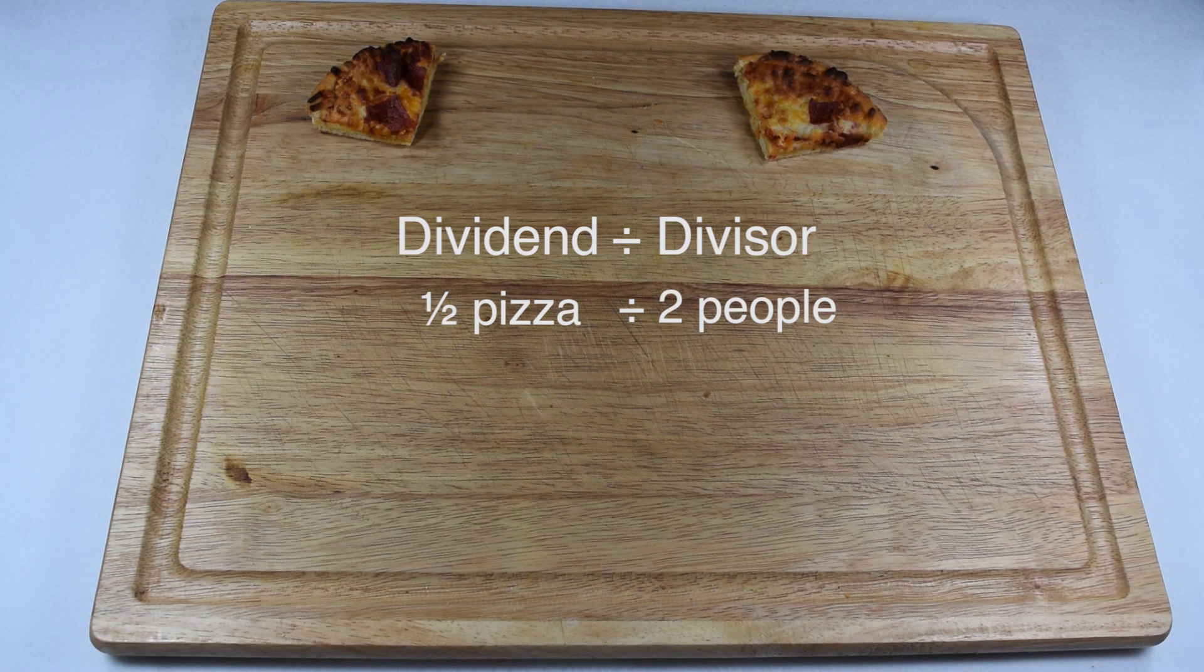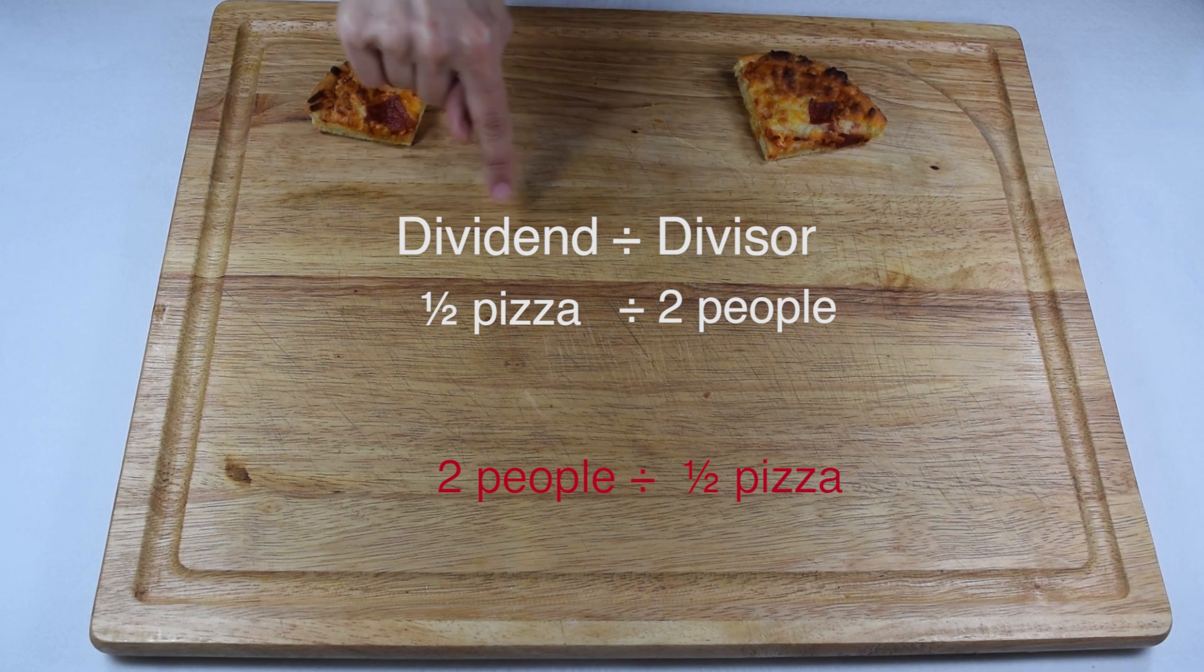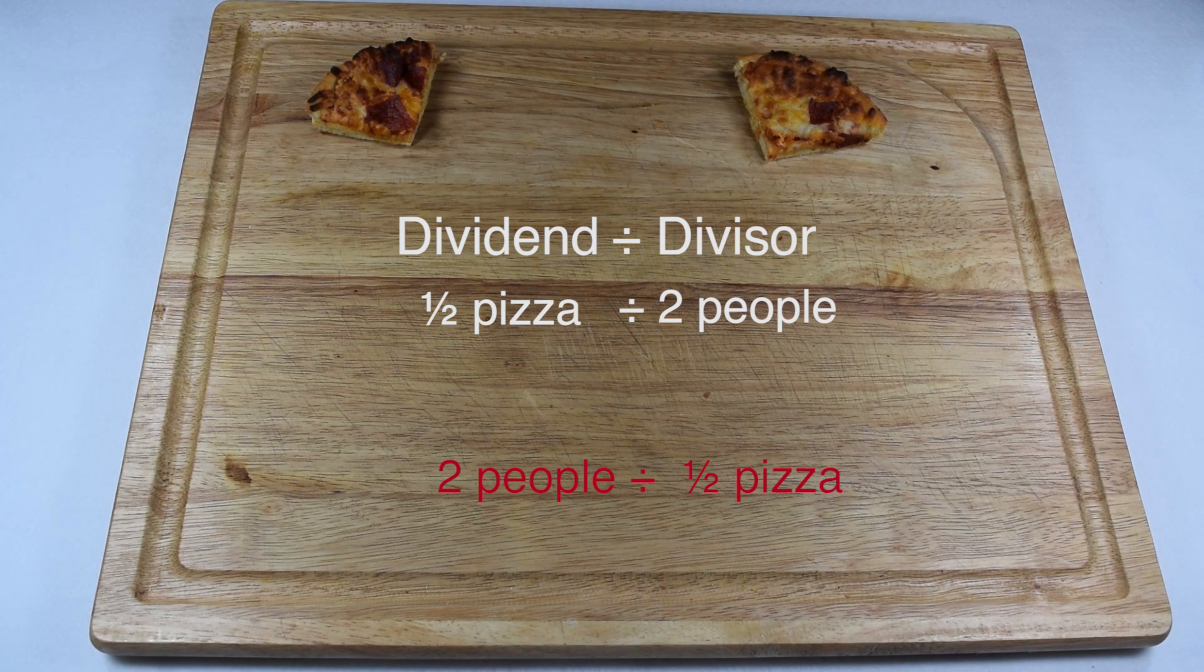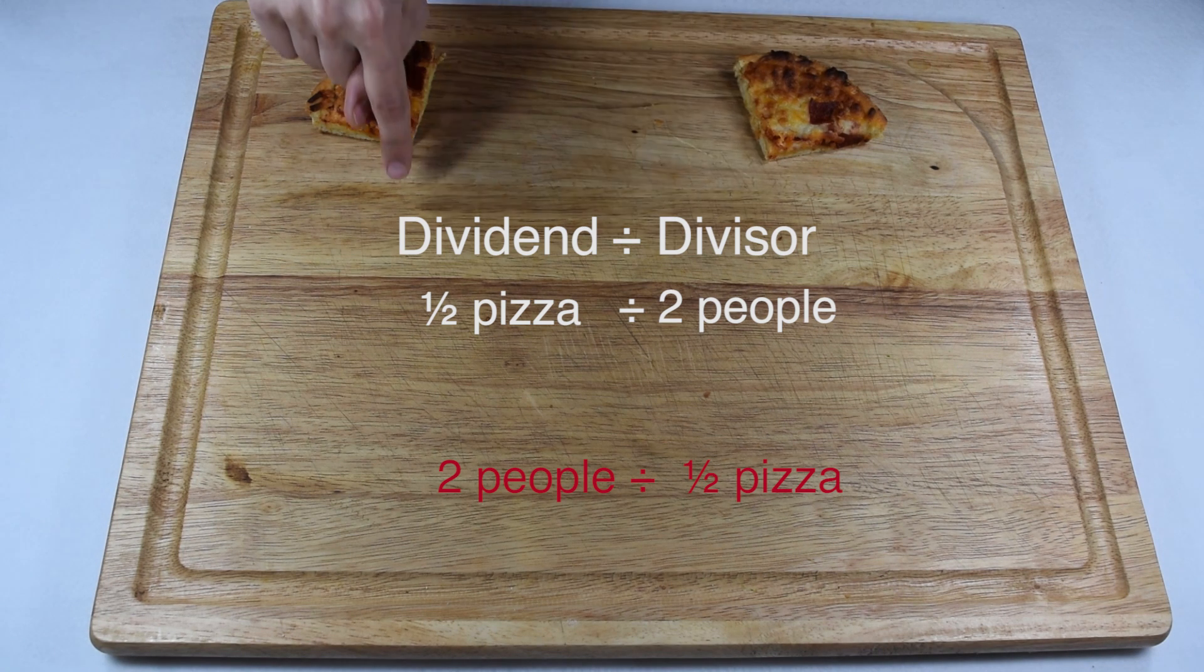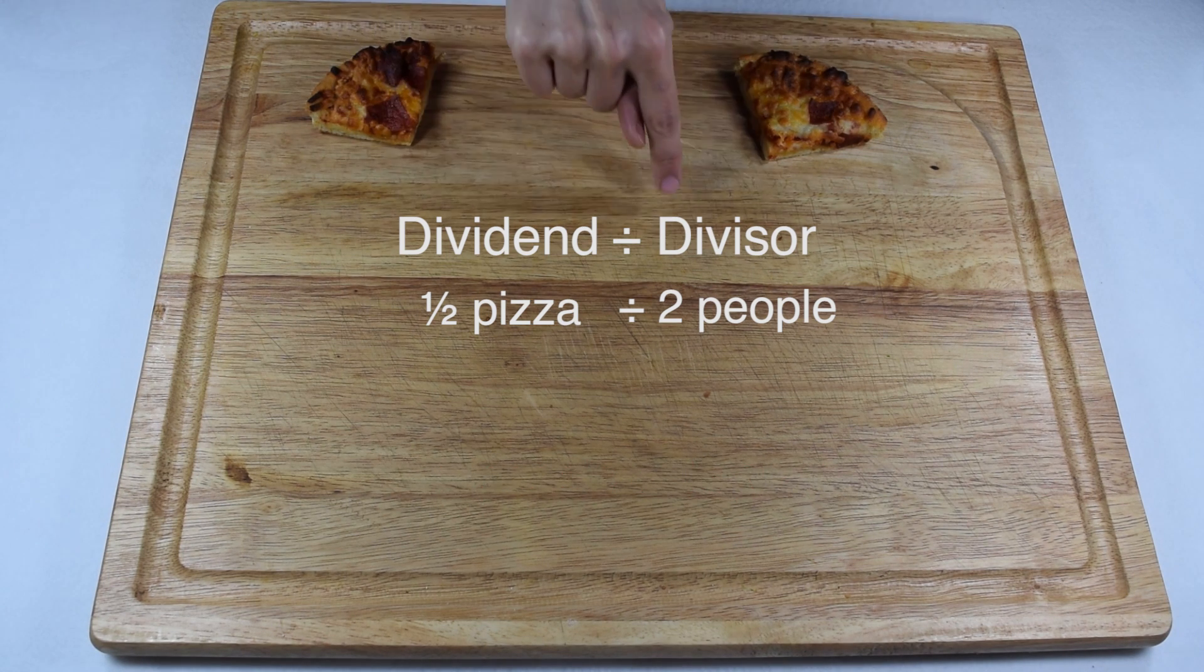Too often when we divide, we tend to rely on the large number coming first. That's not always going to be the case. In this case, if we had set it up as two divided by one half, we would be sharing two people amongst half a pizza. That doesn't make sense, so we're dividing half a pizza amongst two people.